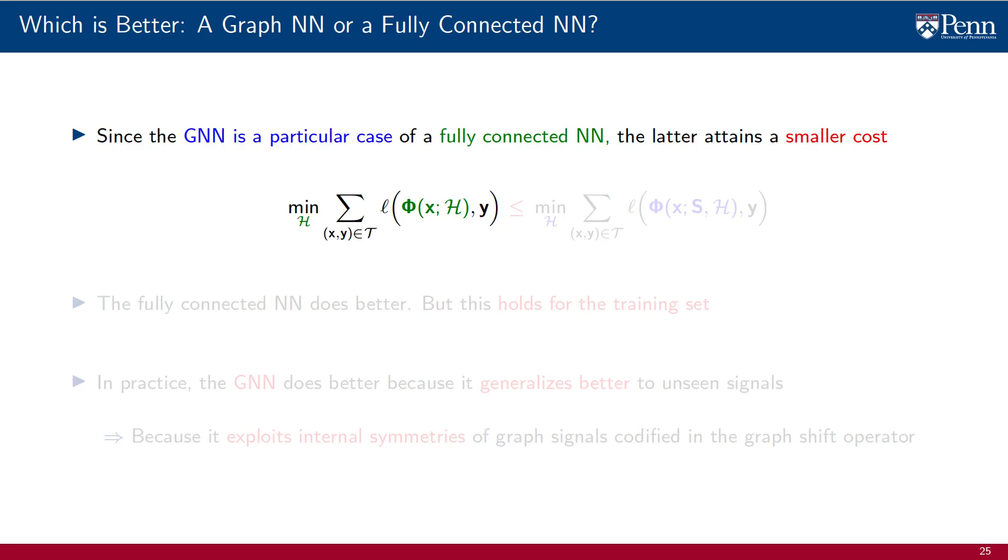A consequence of this fact is that if we compare the best possible cost that is attainable by a fully connected neural network with the best possible cost that is attainable by a GNN, the cost attainable by the neural network is smaller.